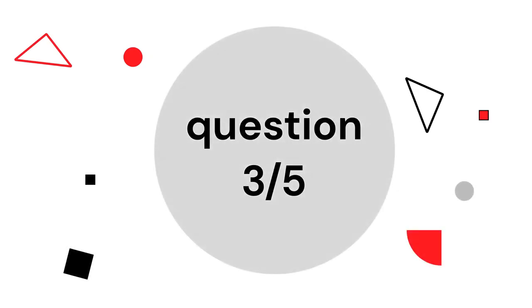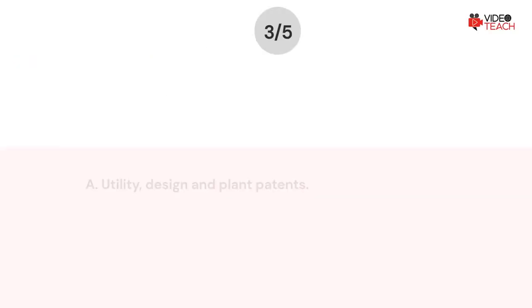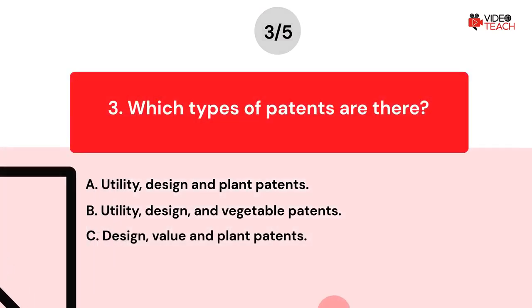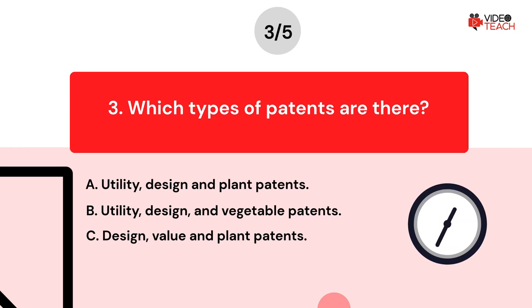Question number three. Which types of patents are there? Option A: utility, design, and plant patents. Option B: utility, design, and vegetable patents. Option C: design, value, and plant patents. Now you have about 15 seconds to think about your answer.